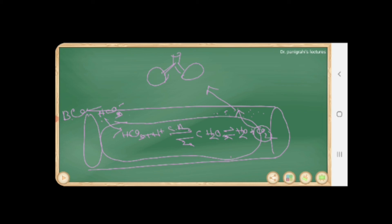When bicarbonate ion enters the RBC through the Band 3 transporter — since the RBC wall is impermeable to charges — the chloride ion present inside the RBC comes out through the same Band 3 transporter into the plasma. This chloride shift at the lungs also maintains electrostatic neutrality inside the RBC.